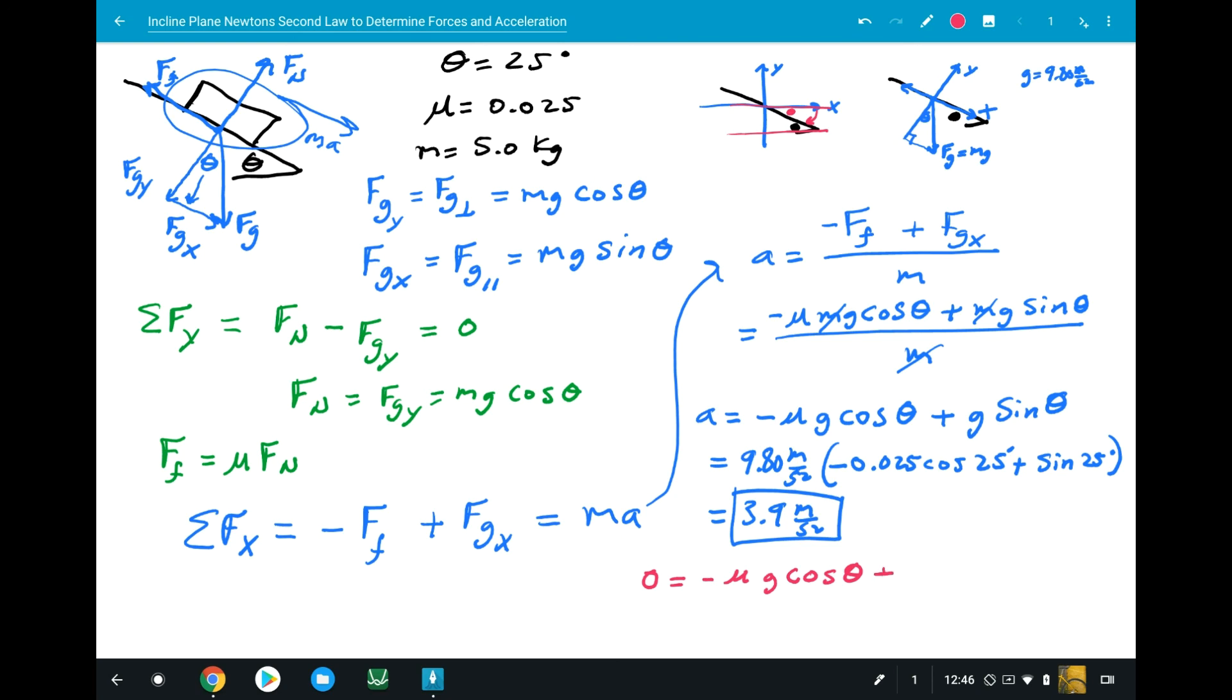Let me show you what I mean. We've got minus mu G cosine theta equals minus G sine theta. Let's solve for mu. You'll notice that mu is equal to sine theta divided by cosine theta.